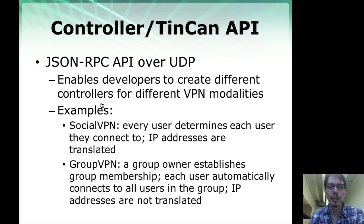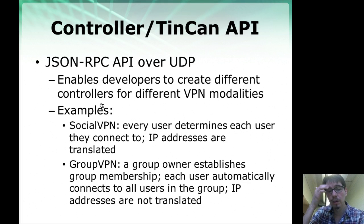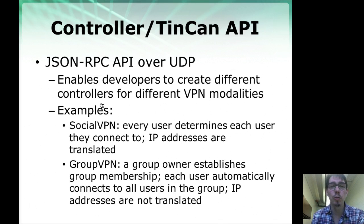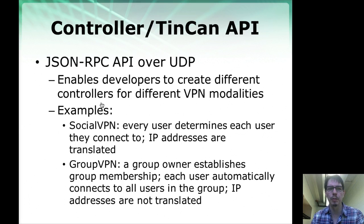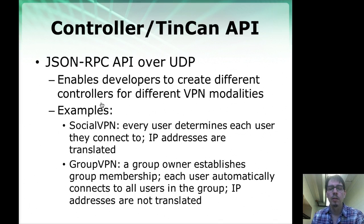Different controllers can implement different modalities of VPNs. For example, in the Social VPN, every user determines who they want to connect with and IP addresses are dynamically assigned and translated. Whereas in Group VPN, a group owner decides who joins the group, and every user in the group connects to every other user by just establishing a relationship with the owner — you don't have to establish n-squared relationships with every user. In Group VPN, IP addresses are not translated.